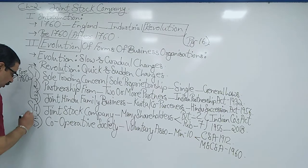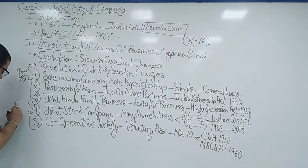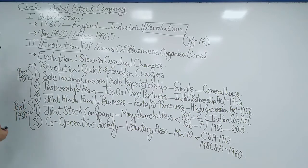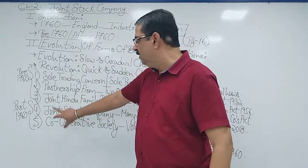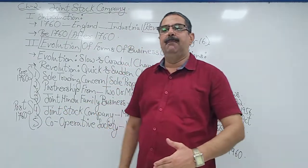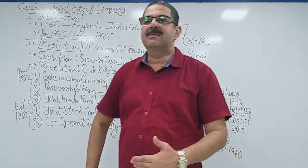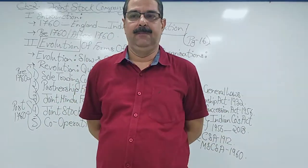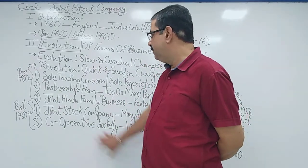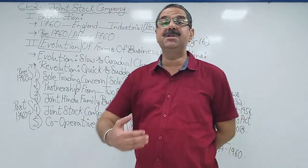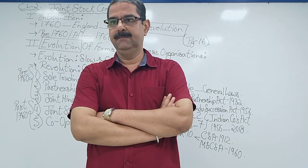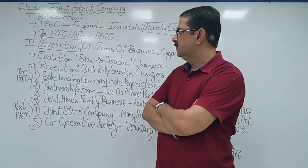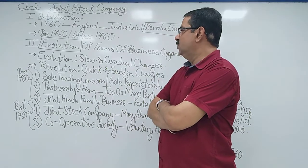These two organizations — Joint Stock Company and Co-operative Society — are seen post-1760, after the Industrial Revolution. Why? Because these two organizations have greater ability to raise large capital and provide efficient management.